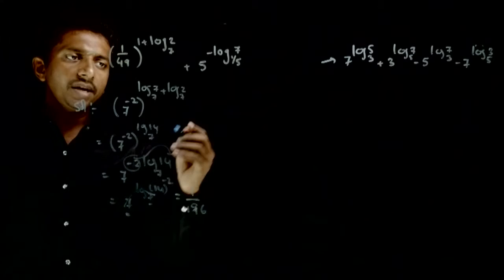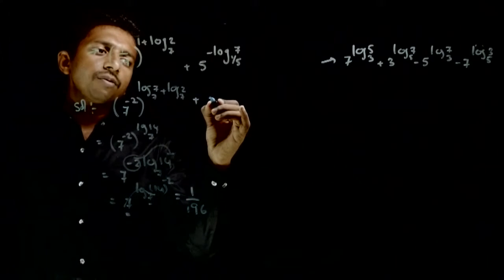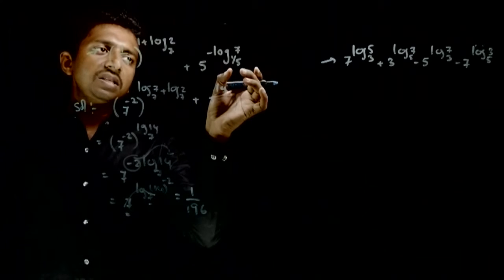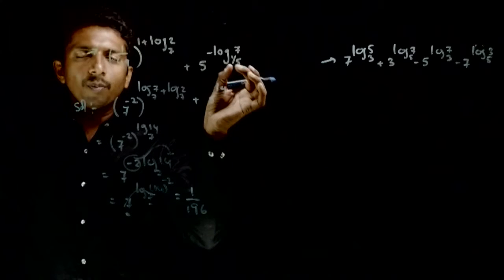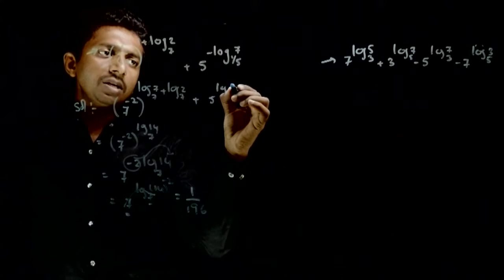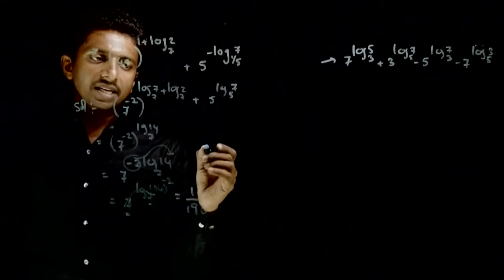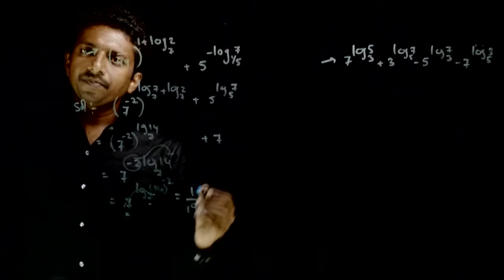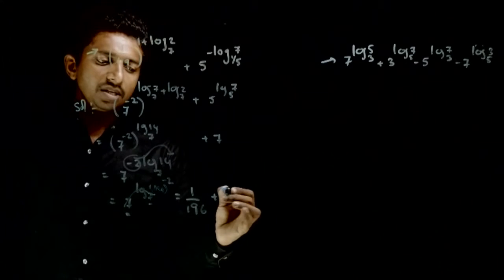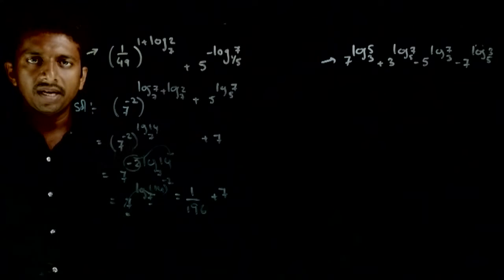And what happens to the second part? Second part they can get. So 5 power log. This is 5 power minus 1. So minus 1 comes out. So log 7 to the base 5 ho jai. So this 5 and this 5 will get cancelled. So this will be 7. So the final answer will be 7 plus 1 by 196.